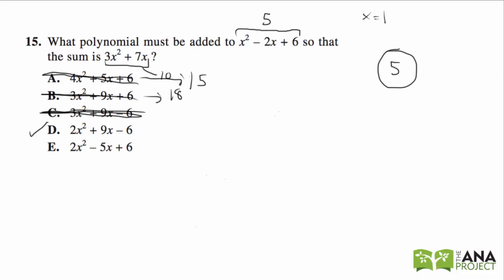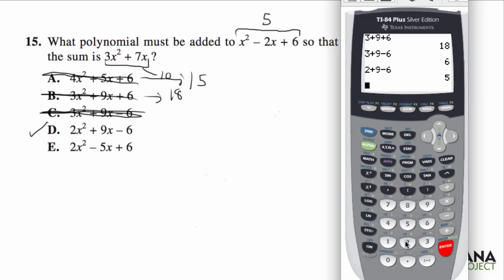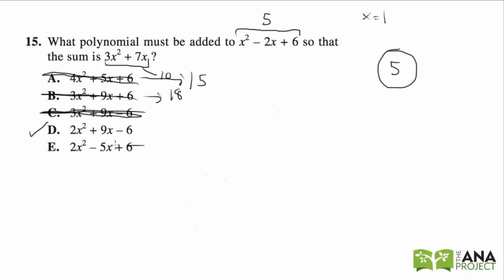Let me check E: 2 times 1 squared, which is 2, minus 5 times 1, which is 5, plus 6. That's 3, so that's wrong. The correct answer is D. Again, another good candidate to pick numbers and plug in. See you in the next video.